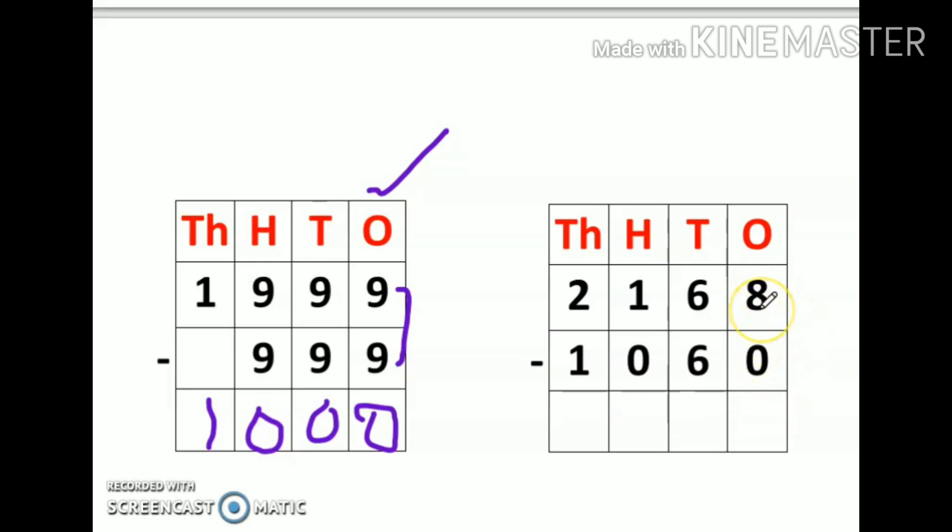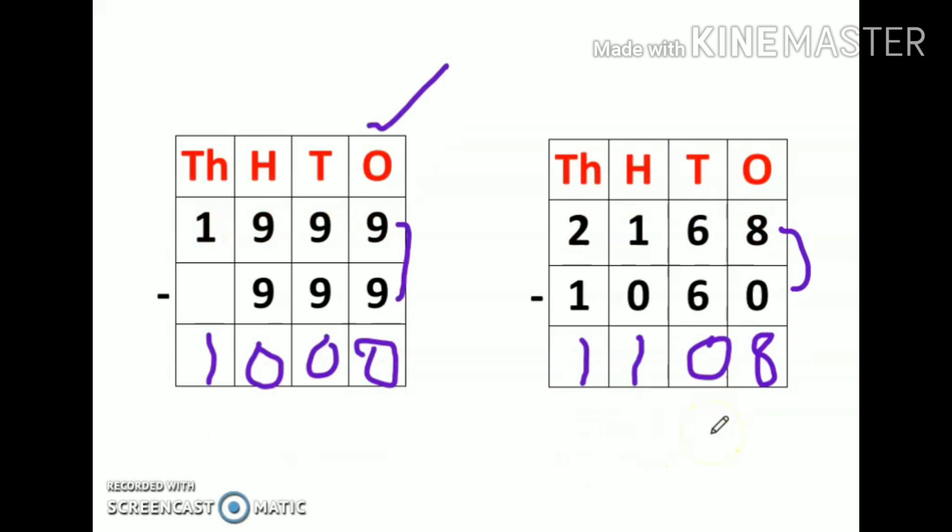So here you will find the number on the top is bigger, it means it's not a borrow sum, it's a simple subtraction sum. Now eight minus zero is eight, six minus six is zero, one minus zero is one, two minus one is one. So 1,108 is my answer. I hope you have understood this much.